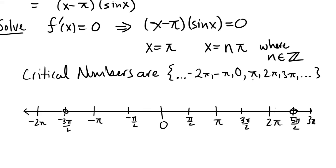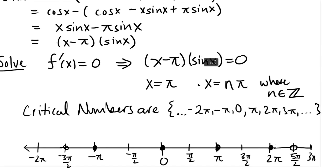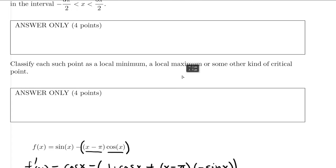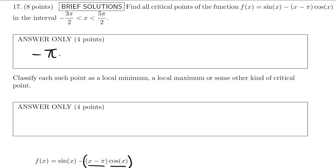The critical numbers are ..., −2π, −π, 0, π, 2π, 3π, ... and so on. The question is which ones lie in the interval (−3π/2, 5π/2). Well, we have −π, 0, π, and 2π. Those are the critical numbers that lie in the given interval. Let's write those in the answer space: −π, 0, π, and 2π.